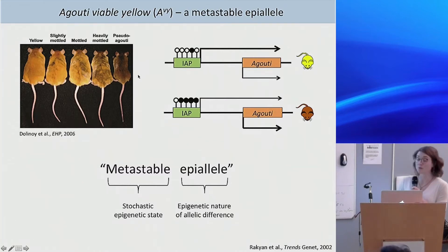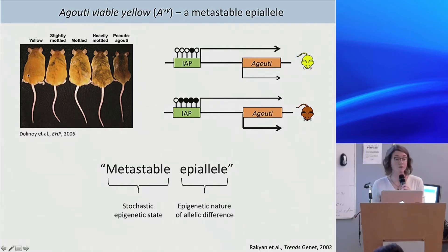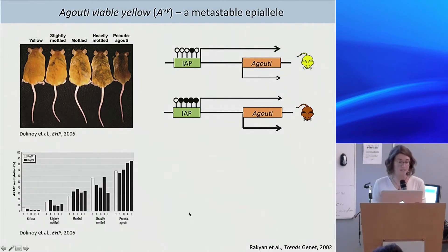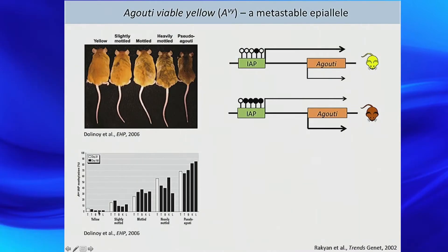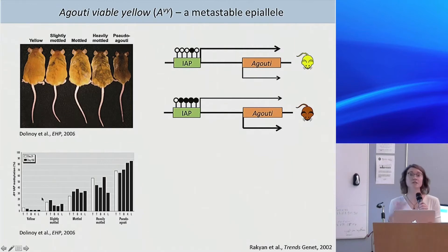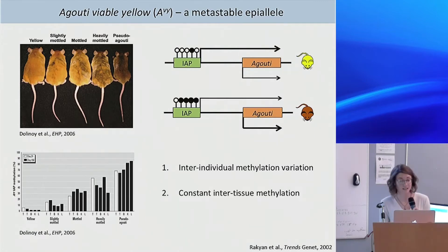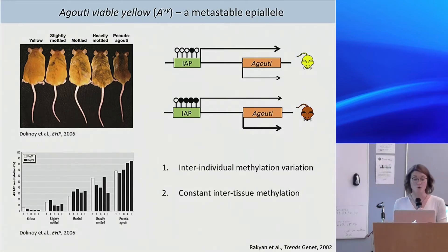We see differences in methylation between individuals, but an important characteristic of metastable epialleles is that if you look at different tissues within one mouse, you see consistent methylation levels. Five different mice show different levels, and across four or five different tissues they're consistent within one mouse. This suggests the methylation state is established very early in development before tissue differentiation, because it's even consistent across tissues from different germ layers. So we have inter-individual methylation variation and constant inter-tissue methylation — these are the two driving characteristics our lab uses to define a metastable epiallele.